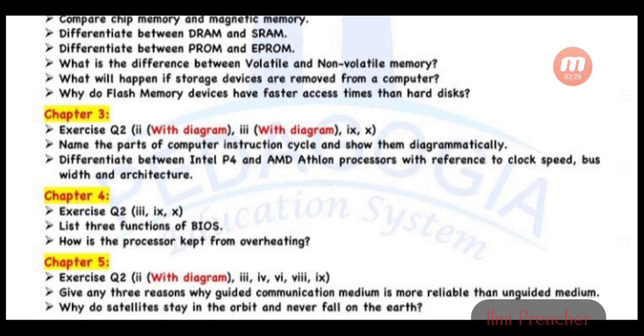Chapter 5, Exercise question 2: parts 2 with diagram, 3, 4, 6, 8, 9. Give three reasons why guided communication medium is more reliable than unguided medium. Why do satellites stay in orbit and never fall on Earth? Now let's move to the next page.